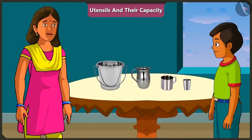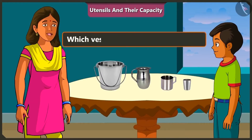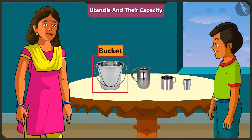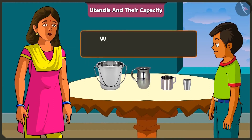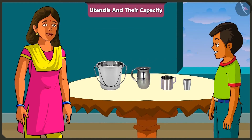Great! Mishtu, now tell me, which of these vessels has the greatest capacity? The bucket has the most capacity. And which vessel has the least capacity? The smallest vessel is the glass, so the glass has the least capacity.